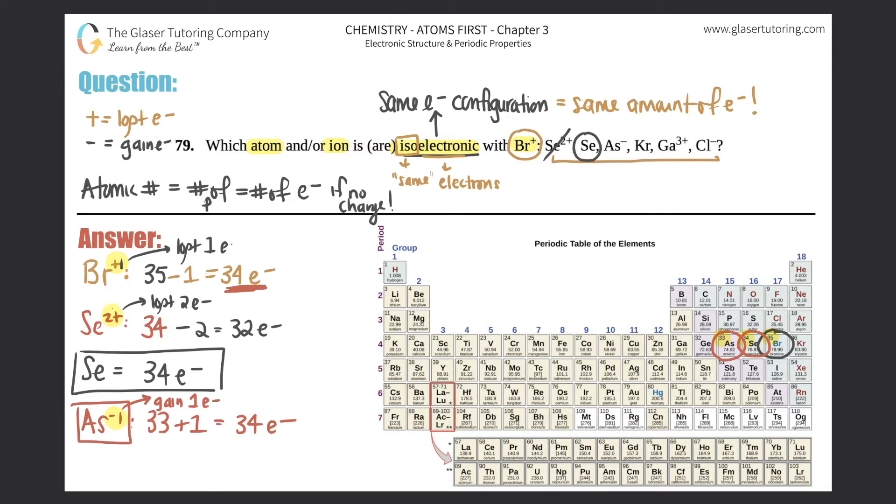Let's do krypton, Kr. Krypton is over here. This has an atomic number of 36. Sorry, I kind of circled it out, but krypton has an atomic number of 36. This is not an ion, it's just an atom. So 36 does not equal 34 because we want it to be 34, so we could cancel out krypton.